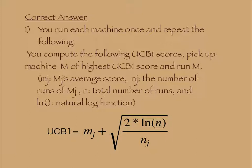Pick up machine M of highest UCB1 score and run machine M. Here, mj stands for Machine Mj's average score. nj stands for the number of runs of Machine Mj. N stands for the total number of runs. And ln stands for natural log function.